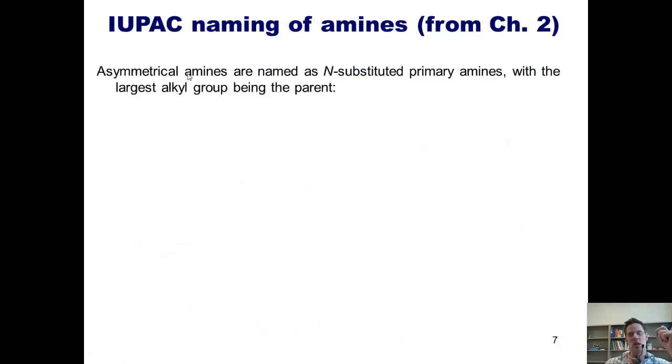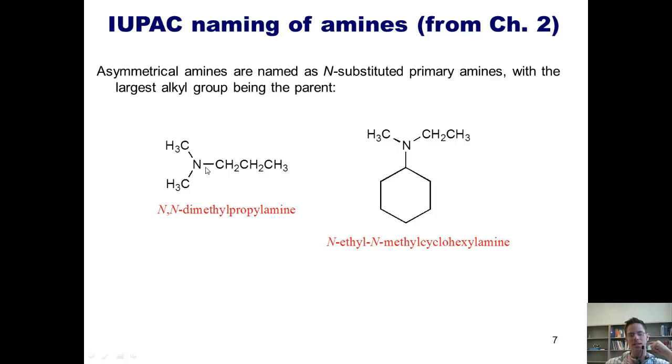Asymmetric amines are named as N-substituted primary amines with the largest alkyl group being considered the parent chain. So let's look at this example here. The longest alkyl group that includes the nitrogen is this propyl group. If this nitrogen were not stuck to these two methyl groups, then the name of this compound would be called propylamine. So that is the parent group. Because this nitrogen is stuck to two alkyl groups, we call it N,N-dimethylpropylamine. The two Ns indicate that these two methyls are stuck to the nitrogen. In this example at right, you can see that the longest chain is the cyclohexylamine. So that is the parent chain. And then you'll see that this nitrogen is stuck to a methyl and to an ethyl. We put those in the name alphabetically. So I thus name it by saying N-ethyl-N-methyl-cyclohexylamine.